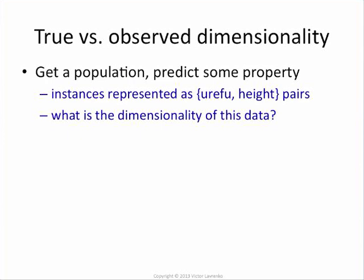Suppose I have a dataset that comes from somewhere, and I want to do some machine learning with it. This dataset has two attributes: height and 'ref', whatever ref is. Every instance has these two numbers, so the question is: how many dimensions do I have in this dataset? The natural answer would be two — I have two attributes, so it's a two-dimensional dataset.